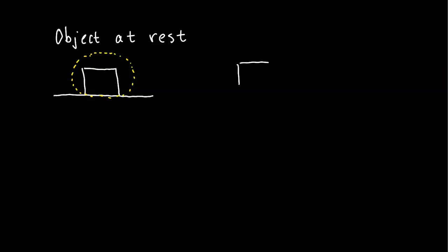Next we're going to draw just our object of interest, our system, which is this box — so now it's a free body. We're going to draw the forces acting on this object. Since it's on Earth we're going to include the gravitational force Fg pointing down. Since it's on the ground there's also a normal force that the ground is pushing up on the object, and we know this because it's not moving so there needs to be a force that balances it. Notice that the arrows begin at the center of mass and point away from the object.